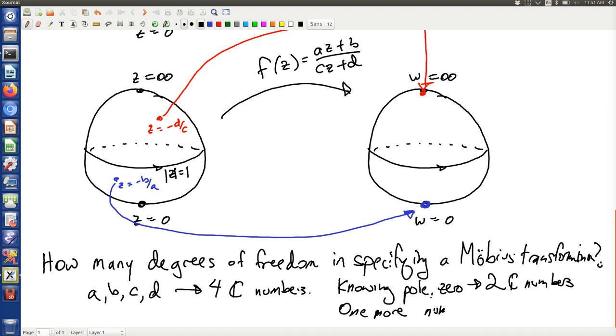And that would seem to be not quite enough. However, there is plus one constraint that ad - bc is not equal to zero. So in the end, you really do need your four complex numbers.